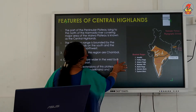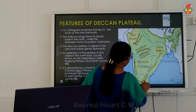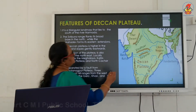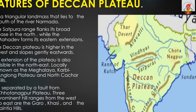The Deccan plateau is a triangular mass that lies to the south of the Narmada river. The Satpura range flanks its broad base in the north while the Mahadev hills form the eastern part. An extension of the plateau is also visible in the northeast.